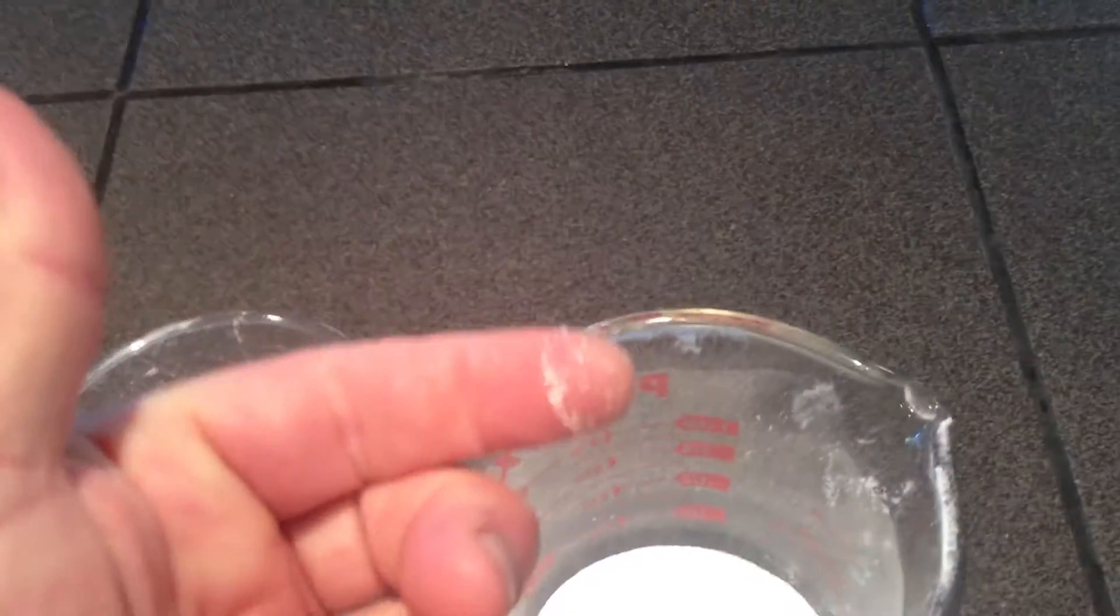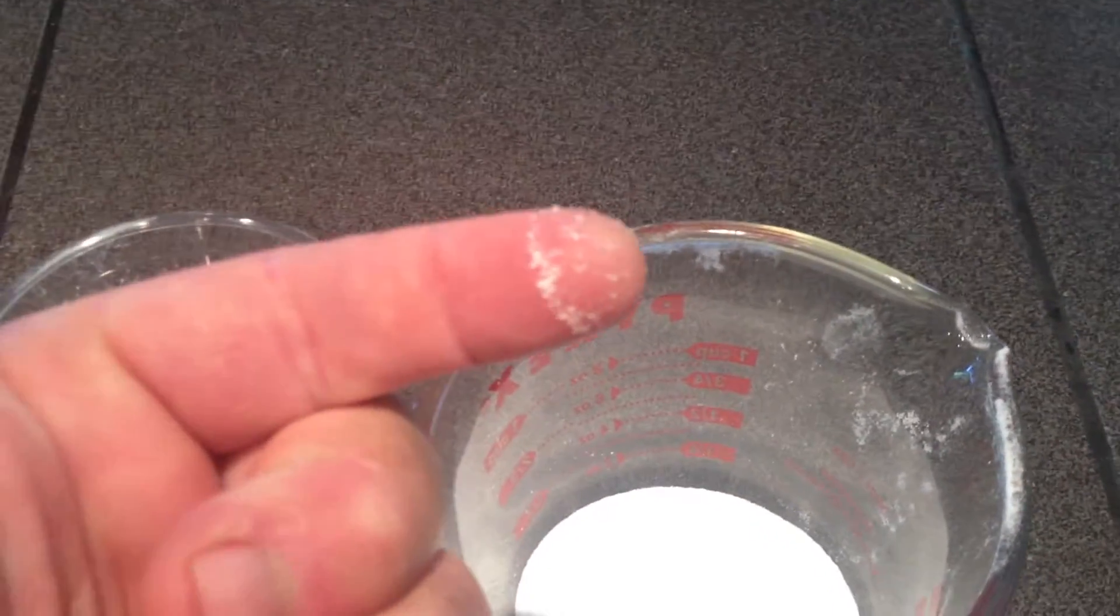If I get this on my skin and leave it for a couple of hours, that'll make a brown loop around my finger right there.